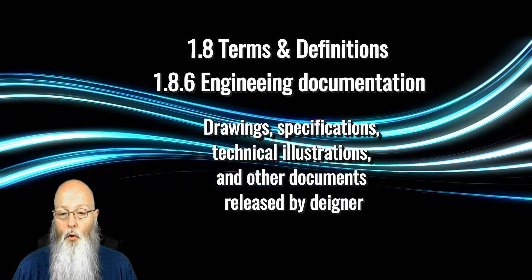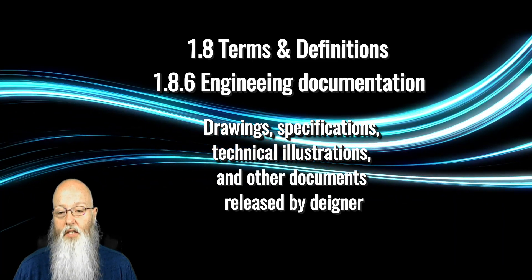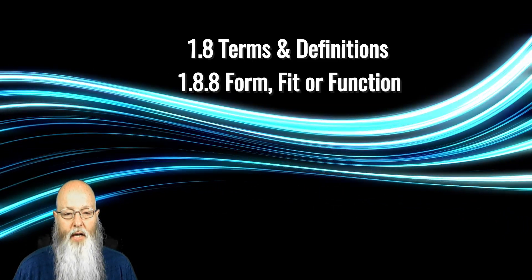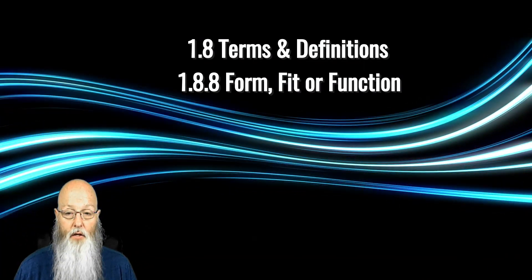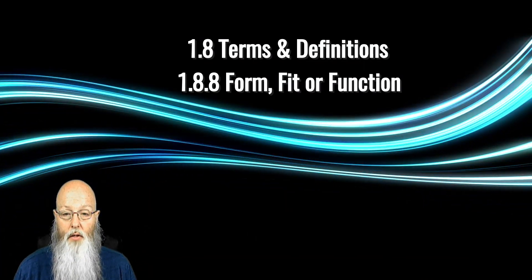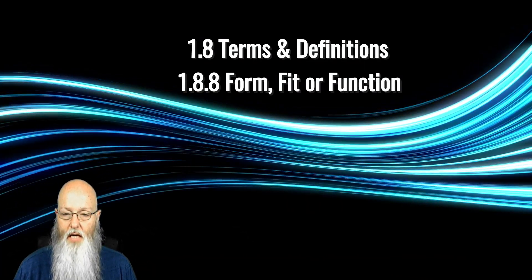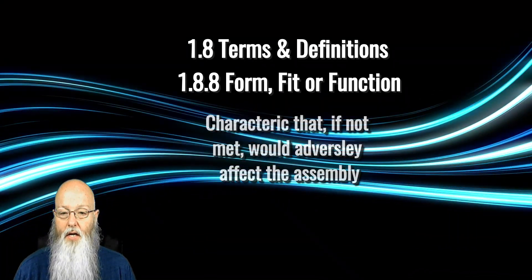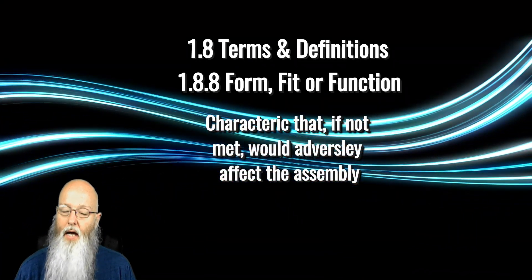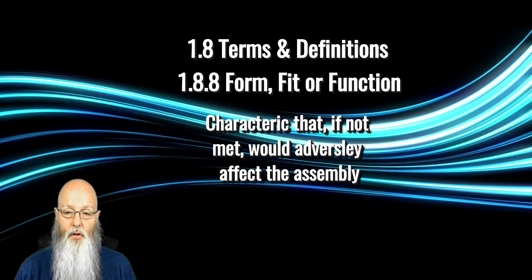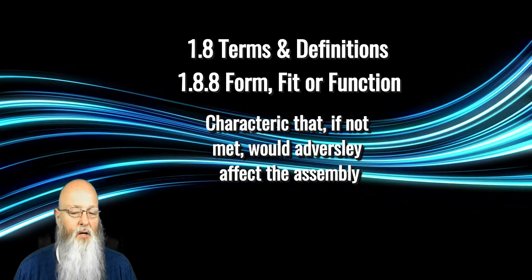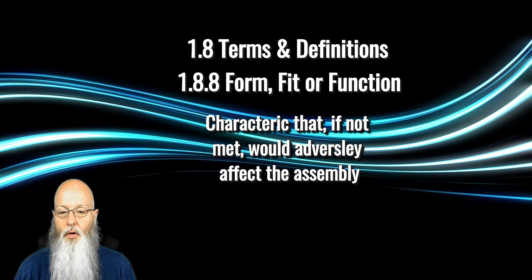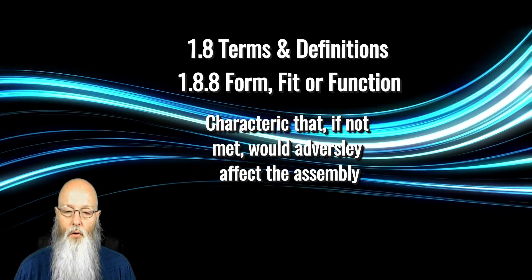The change is one that points to a more succinct language use throughout the document. 1.8.8 is, again, a phrase that's not new to the document but until now has not been stated. Form, fit, and function is defined as an identifying characteristic that, if not met, would adversely impact the assembly. Anything that could cause the assembly to fail is said to have not met form, fit, or function.